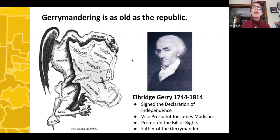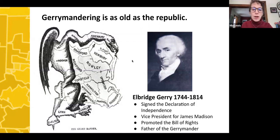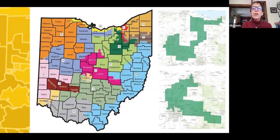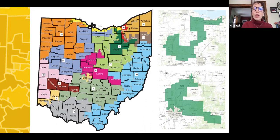With computers and highly technical mapping software, gerrymanders just get better and better all the time. This was the result of the last redistricting in 2011. You can see that the districts are very distorted and strange — very highly gerrymandered — and we're dealing with the consequences of that all the time.